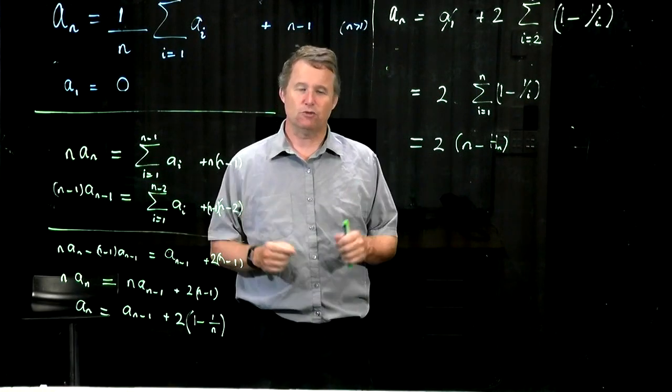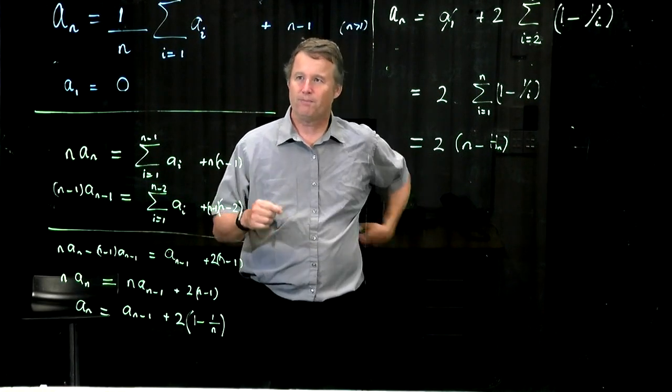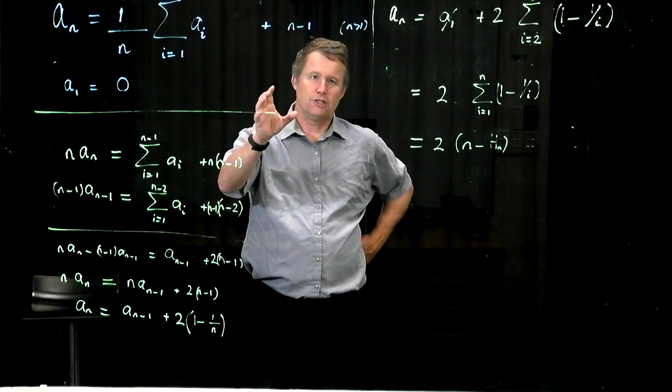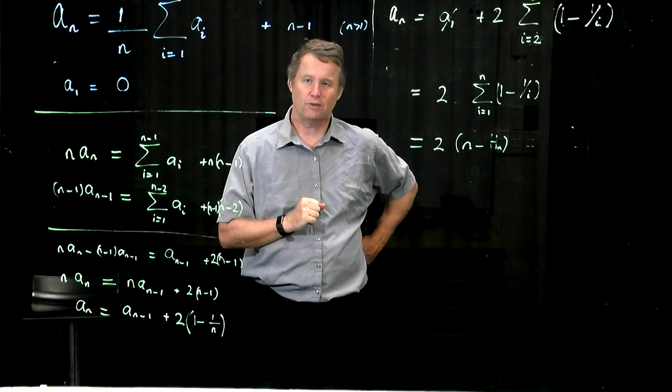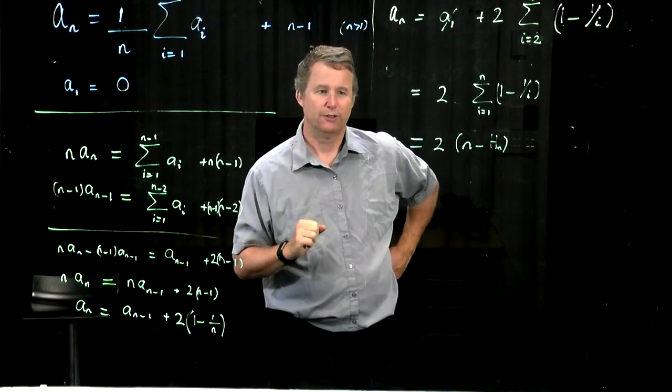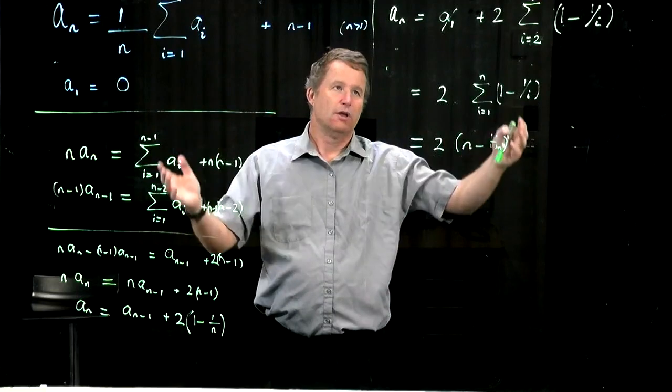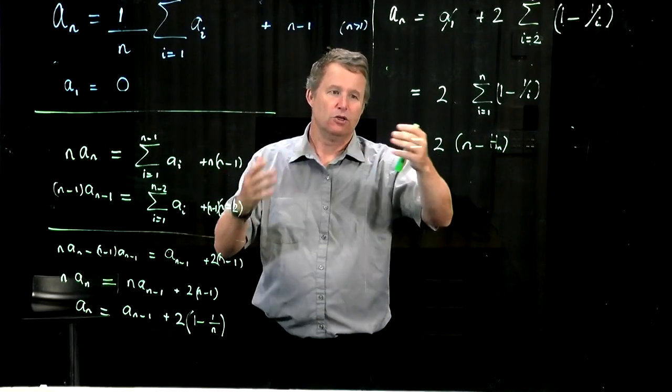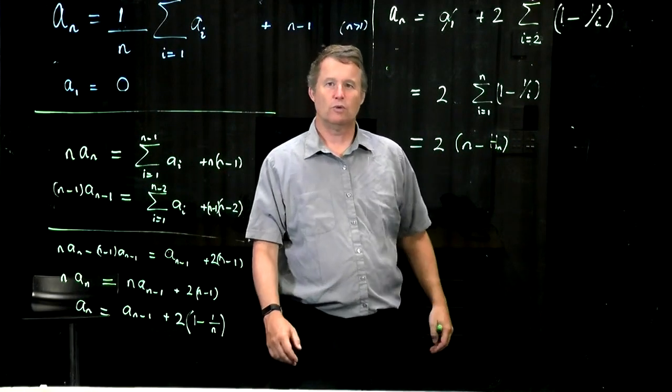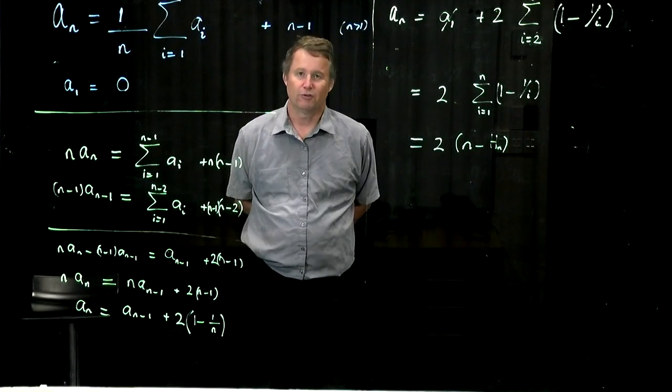So, in other words, if you pick a random order statistic that you want to pick, say I want the kth smallest, and I choose random input permutation, about 2n is what I expect to be the number of comparisons taken.